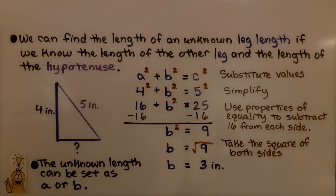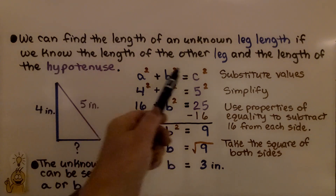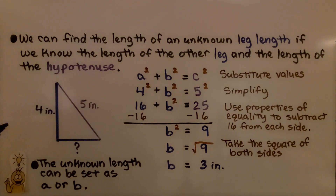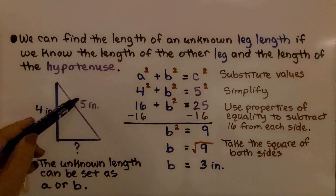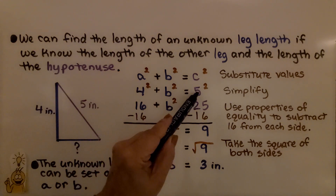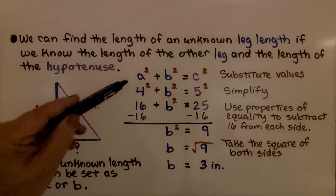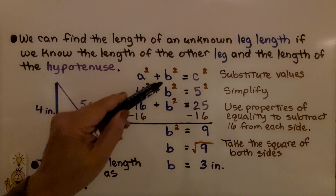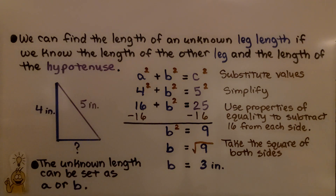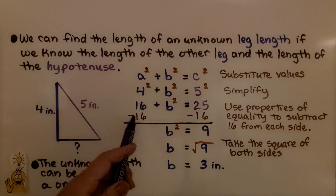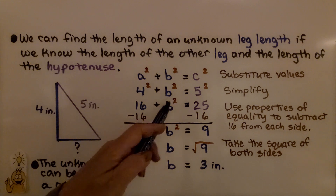We can also find the length of an unknown leg if we know the other leg and the hypotenuse. Now instead of knowing both legs, we know one leg and the hypotenuse. Substituting into the Pythagorean theorem: 4² + b² = 5². Simplifying, 4 × 4 = 16, so we have 16 + b² = 25, because 5 × 5 = 25. We use the properties of equality to subtract 16 from each side to isolate b².